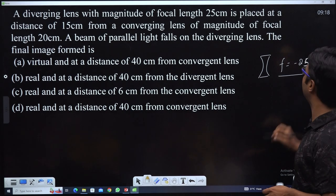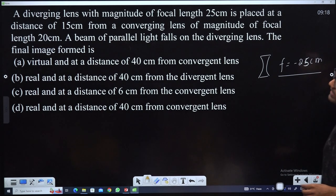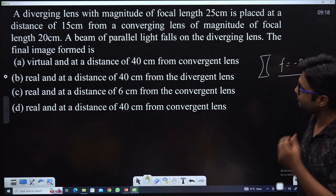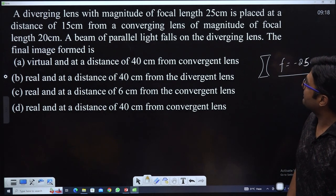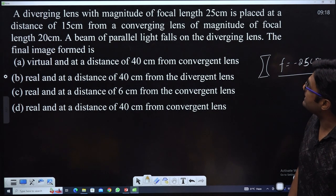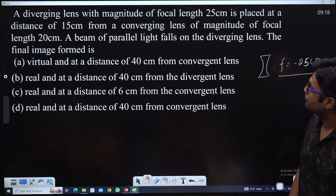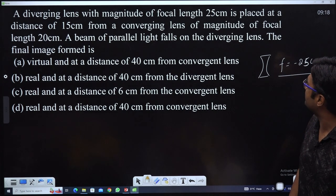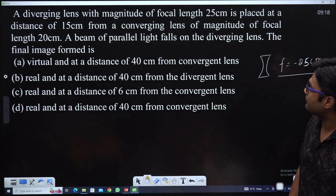The diverging lens is placed 15cm from a converging lens with focal length 20cm. A beam of parallel light falls on the diverging lens. Where will the final image be formed?